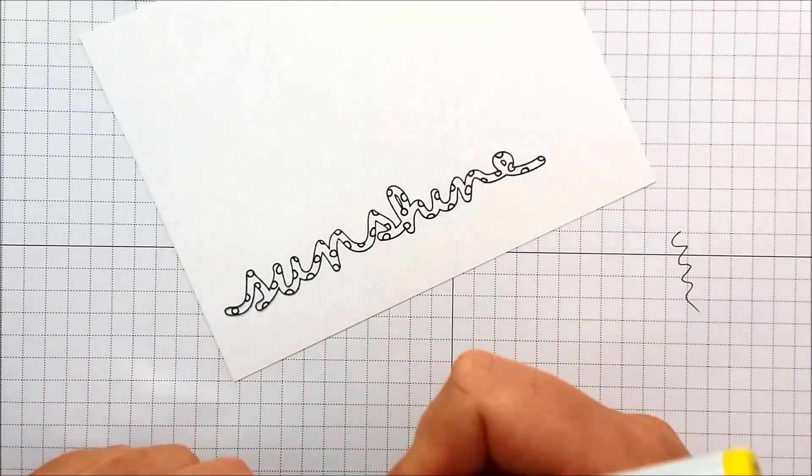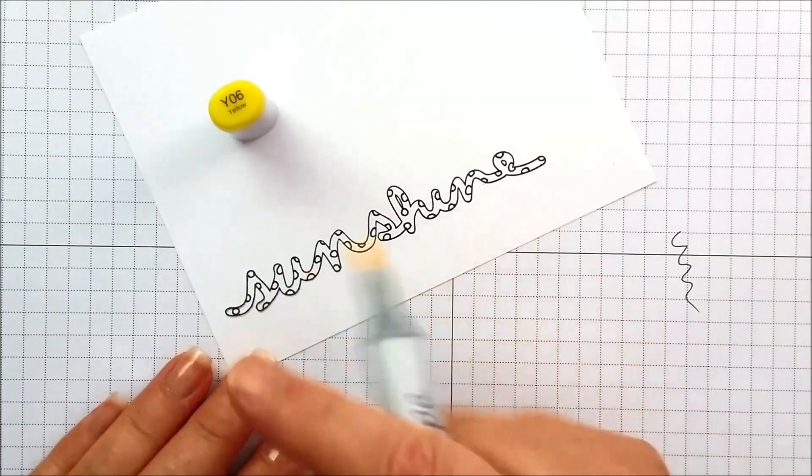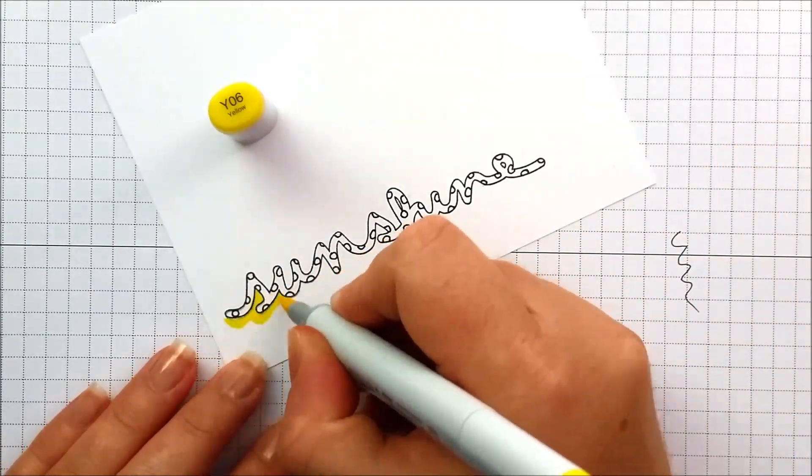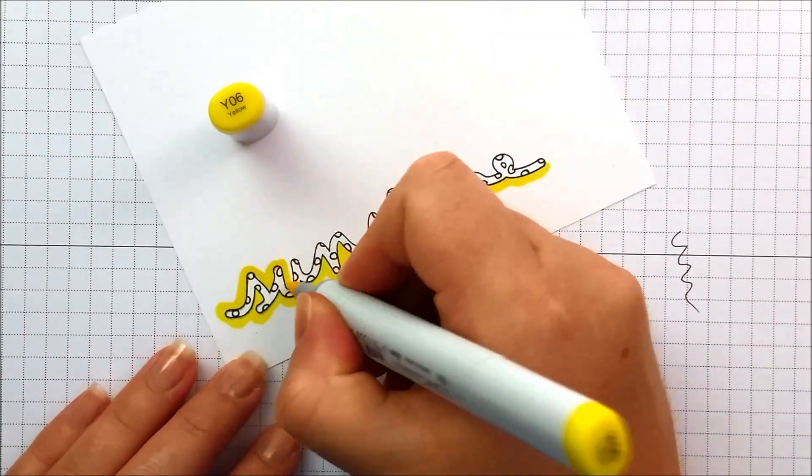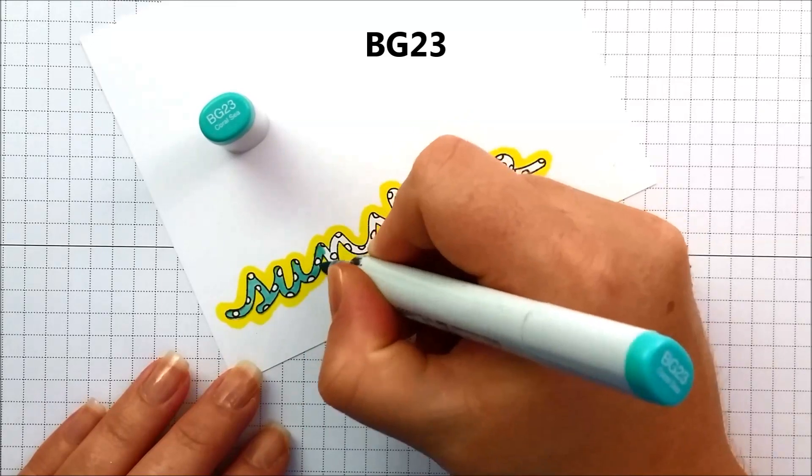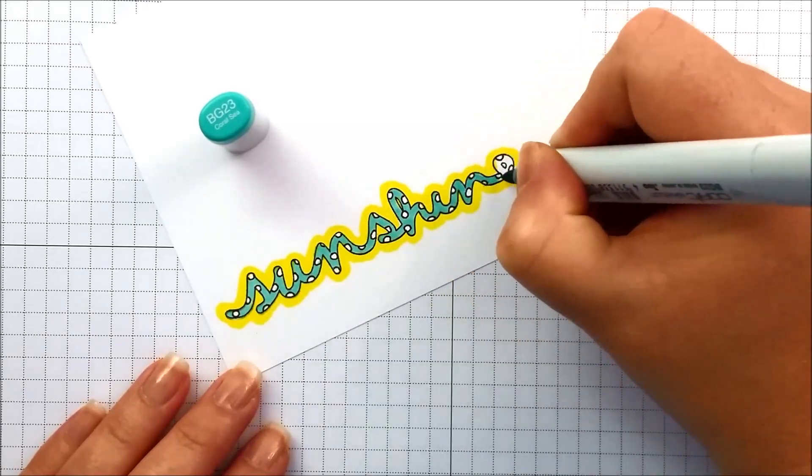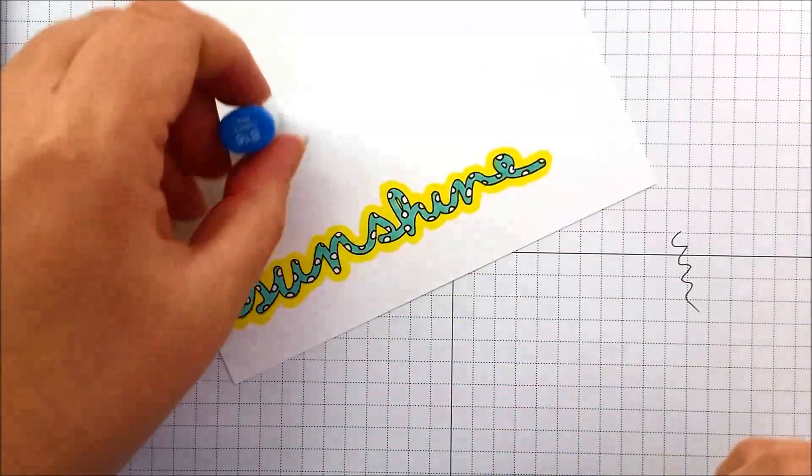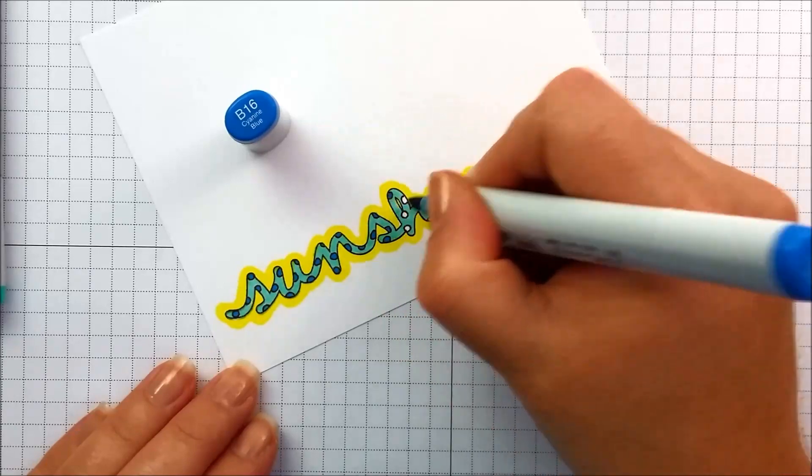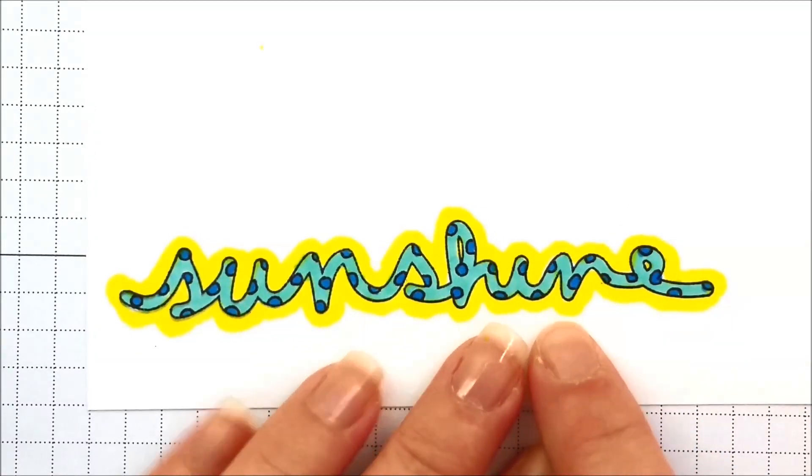And now we're going to color with a few Copics and this is a Y06. Instead of coloring the inside I'm actually going to make our word look like it's glowing. I'm going to finish up the polka dots with a V16. There we go, another way to change up your stamps - make them glow and color them in.